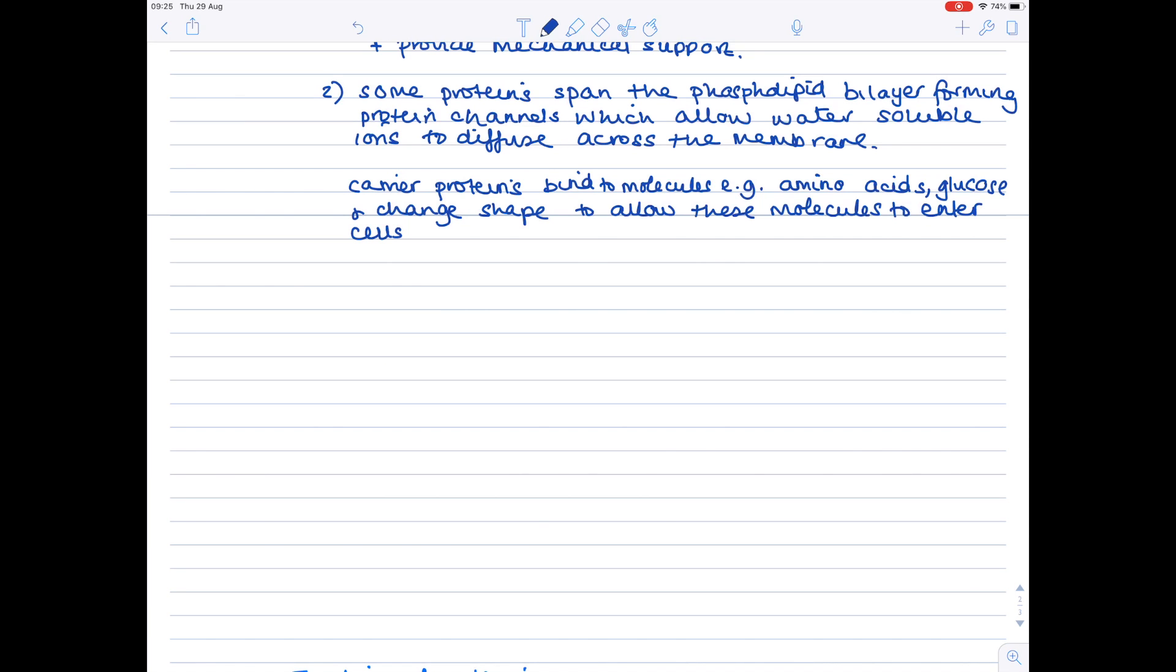There are also carrier proteins. These bind to molecules such as amino acids and glucose. The carrier proteins change shape to allow these molecules to enter cells. Remember, the amino acids and glucose are required by the cell, particularly the glucose, for respiration. Because they have to change shape, we know that this will require energy from ATP, so it involves active transport.